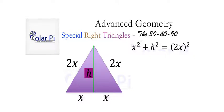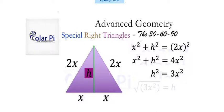We know that 2x times 2x is 4x², so the equation becomes x² + h² = 4x². If we subtract x² from both sides, we get h² = 3x². Since we're trying to find h in terms of x, we take the square root of both sides.